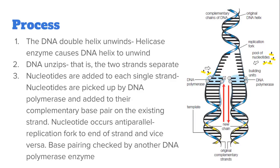The first part of the process is where the DNA double helix unwinds, and this is caused by an enzyme called helicase. The second part of the process is where the DNA unzips and the two strands separate to create the replication fork.